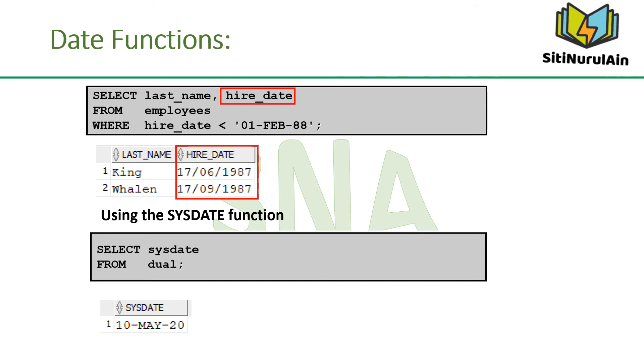The Oracle database stores dates in an internal numeric format: century, year, month, day, hours, minutes, and seconds. The default date display format is DD-Mon-RR. This enables you to store 21st century dates in the 20th century and 21st century dates in the 21st century in the same way. In the example in the slide, the hire_date column output is displayed in the default format DD-Mon-RR. The Oracle SYSDATE function returns the current date and time of the operating system where the Oracle database is installed.